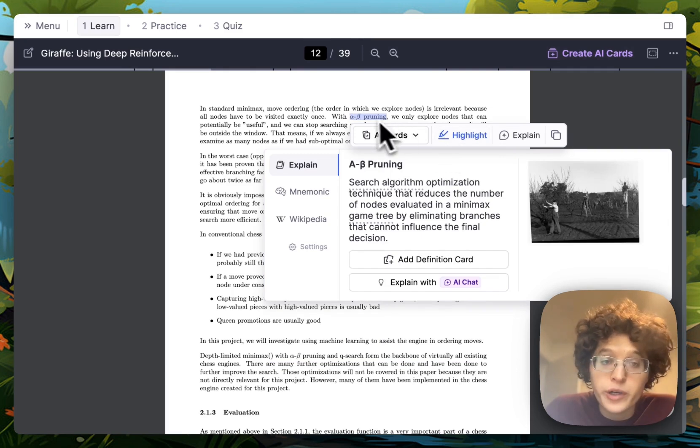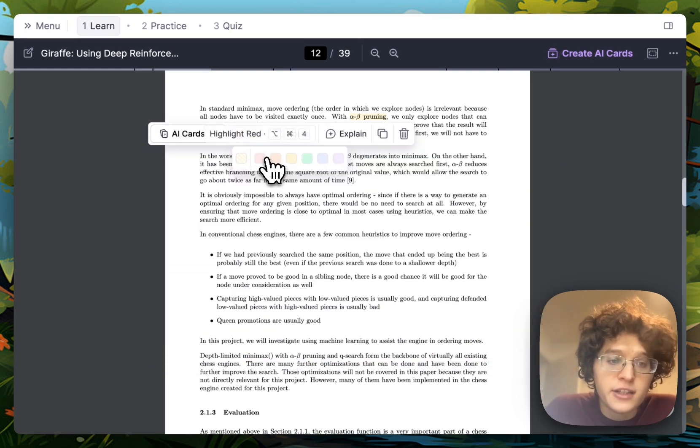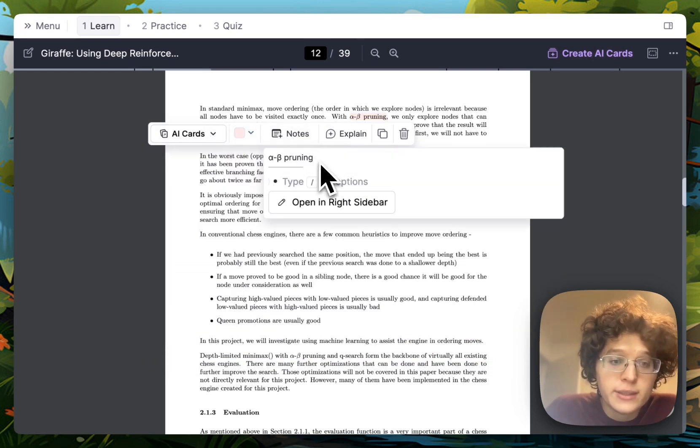If you highlight any term or any part of your PDF, you can then also, as normal, still adjust the color of your highlights, add notes to it, and all the existing features of the prior RemNote PDF viewing and reading experience.